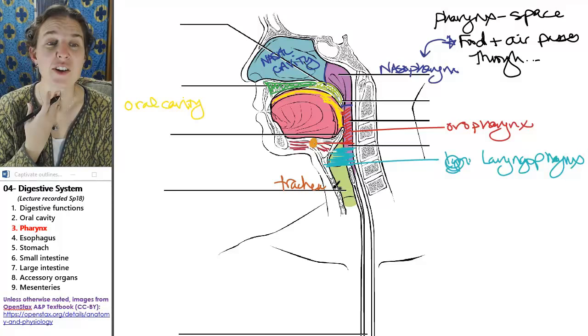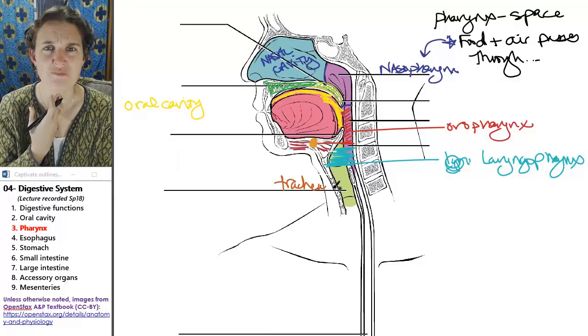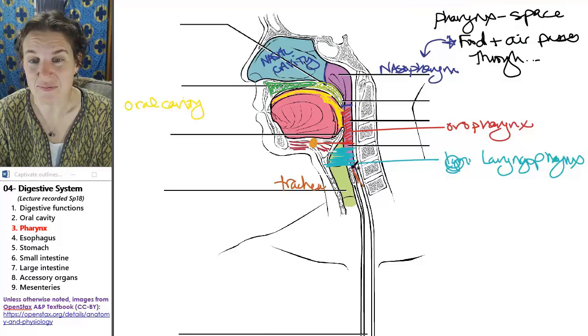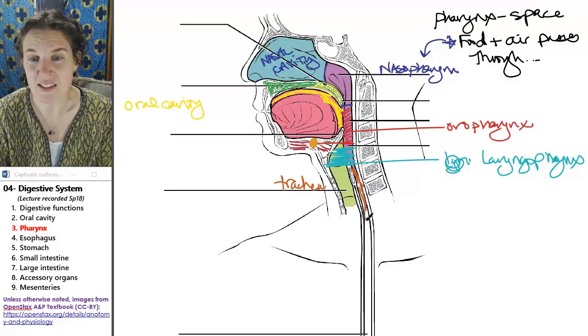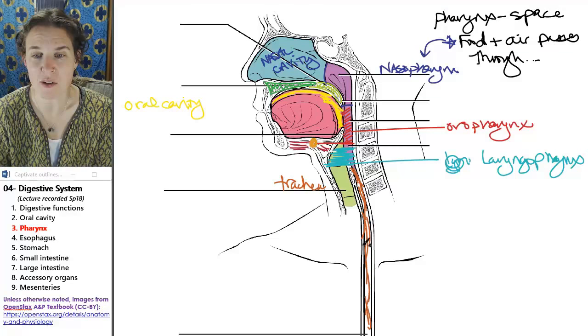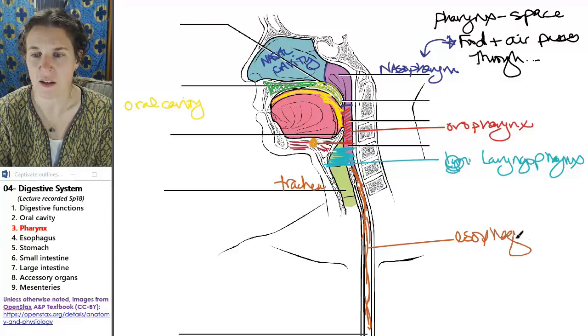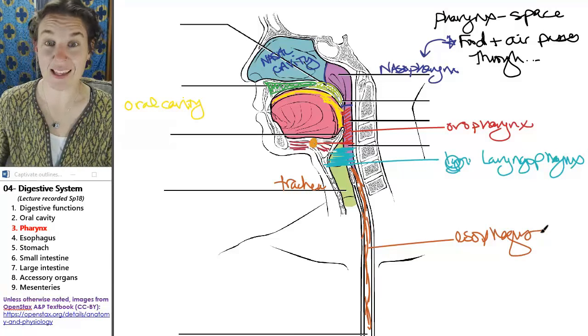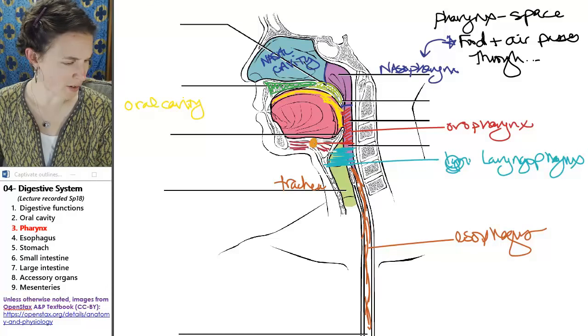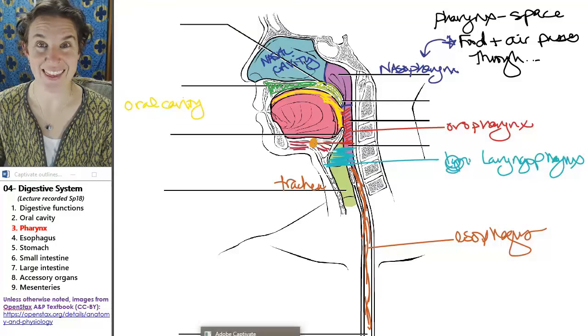Trachea is anterior. You can feel that thing. It's super cartilage-y. And posterior to that is the esophagus. And the esophagus is the next structure that we're going to talk about. So I just tried to color in the esophagus. And let's talk about that esophagus next. Is there anything else I need to tell you? I don't think so.